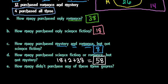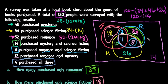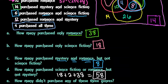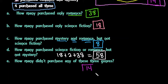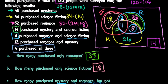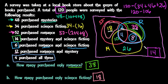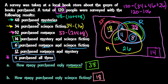The last question: how many didn't purchase any of these three? That's the part on the outside of all circles, which is 14. To recap: draw your Venn diagram with three sets, start with the all-three intersection, then work your way up. Thanks for watching — if you have questions or additional topics you'd like covered, please let me know, and please subscribe.